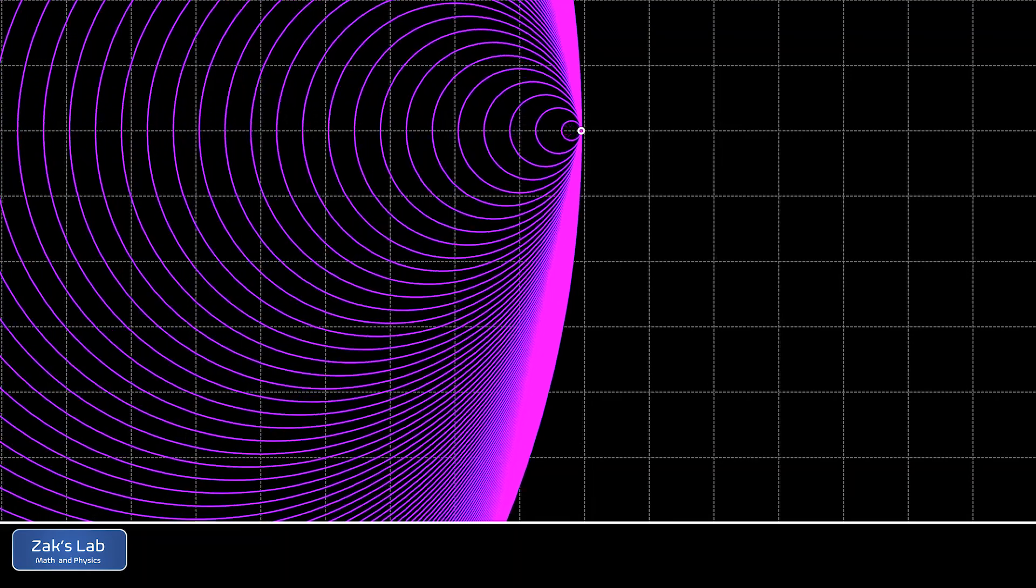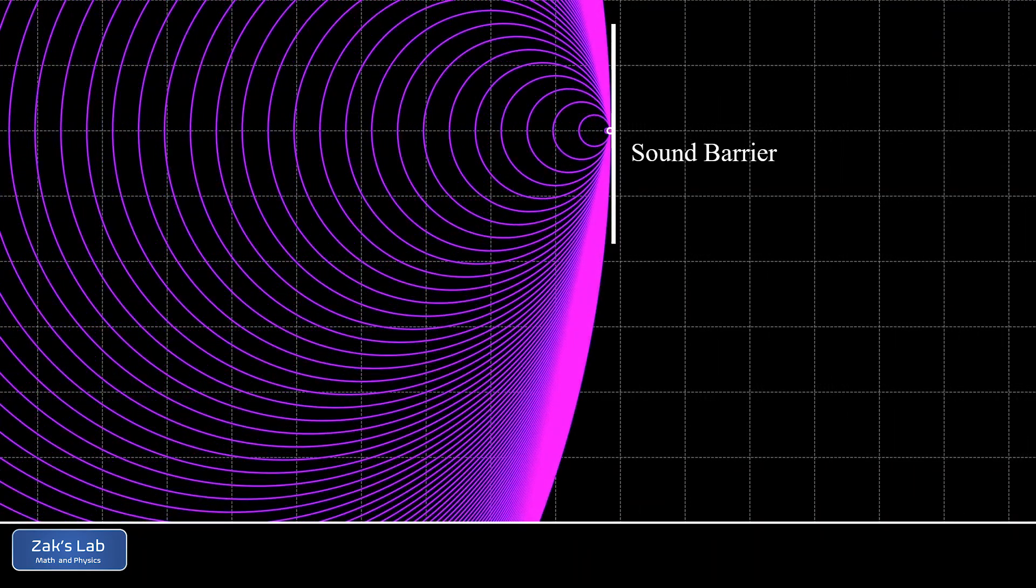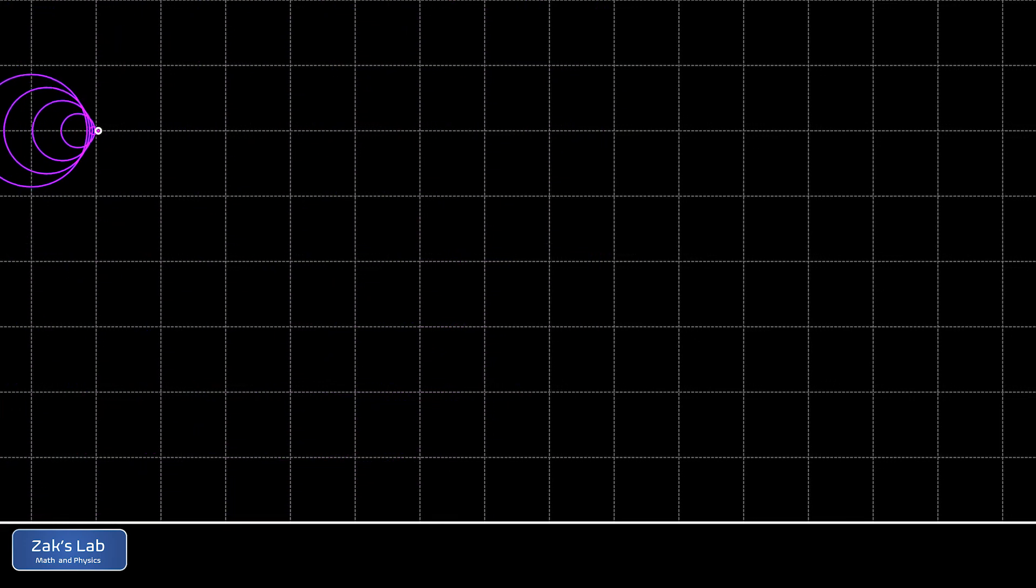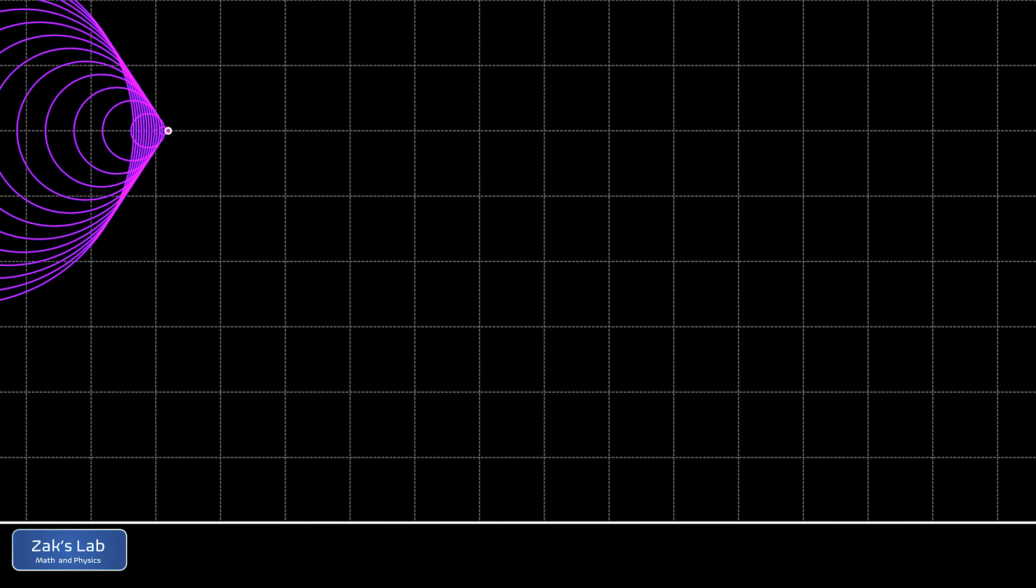Now, of course, if the plane has sufficient thrust, it can punch through the sound barrier, and the velocity becomes supersonic. So here's what it looks like at Mach 1.2. And now we see the formation of a shock wave propagating behind the airplane.